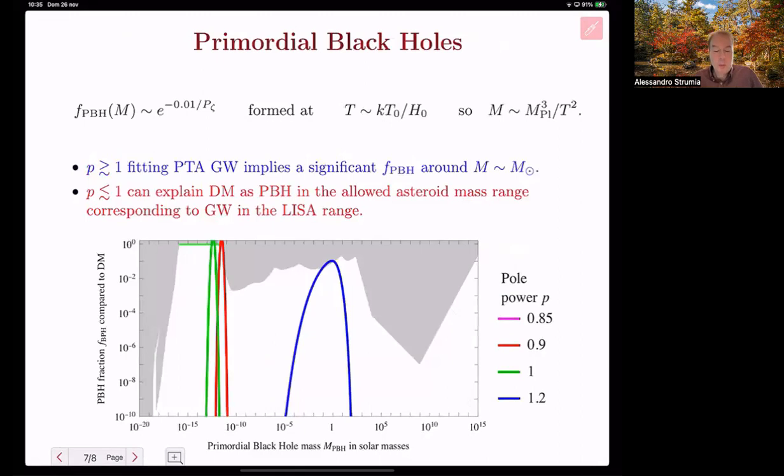Next, we compute the primordial black holes that are given by the tail of the roughly-gaussian distribution. As a result, that abundance is exponentially suppressed and one needs power spectrum around 0.01 to get a dark matter like abundance of primordial black holes. The mass of the black hole is computed in terms of the wave number by computing the temperature at which the mode re-enters the horizon during the Big Bang.